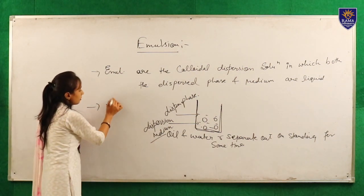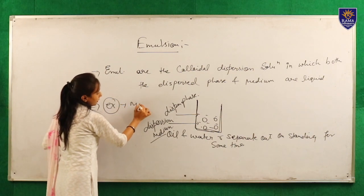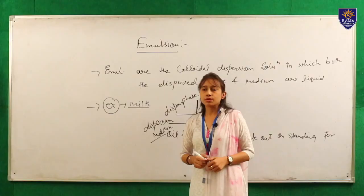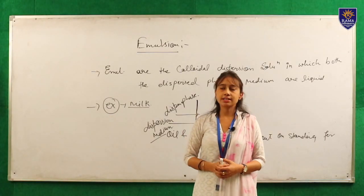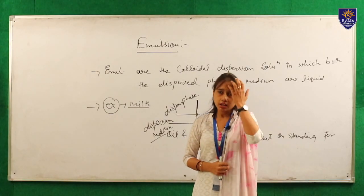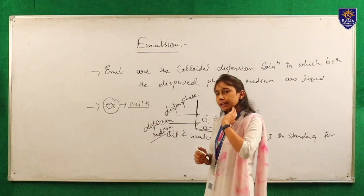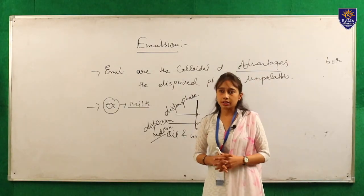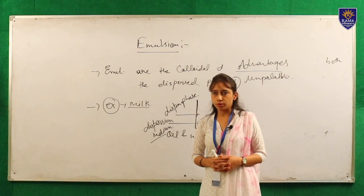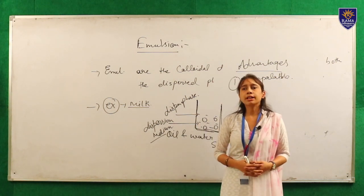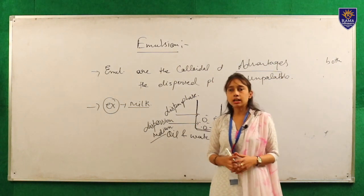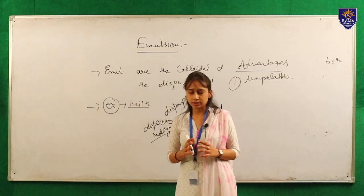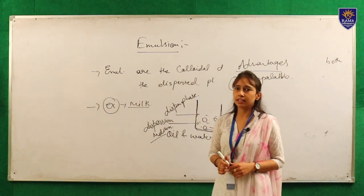An example of an emulsion is milk — milk is a natural example of an emulsion. Moving to the advantages: number one, unpalatable drugs can be administered in a palatable form; number two, it improves the rate of absorption; number three, oil-soluble drugs can be masked in the aqueous phase.